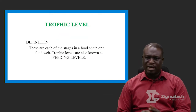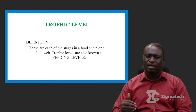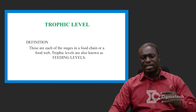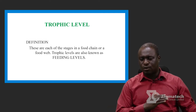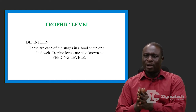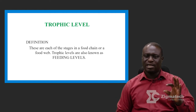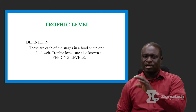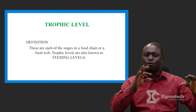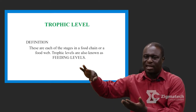Next is trophic level. What is a trophic level? Trophic level can simply be defined as each of the stages in a food chain or a food web. Another name for trophic level is feeding level. Going back to our food chain example — grass, grasshopper, toad, snake — we have four different stages, meaning we have four different trophic levels: grass is the first, grasshopper the second, toad the third, and snake the fourth.